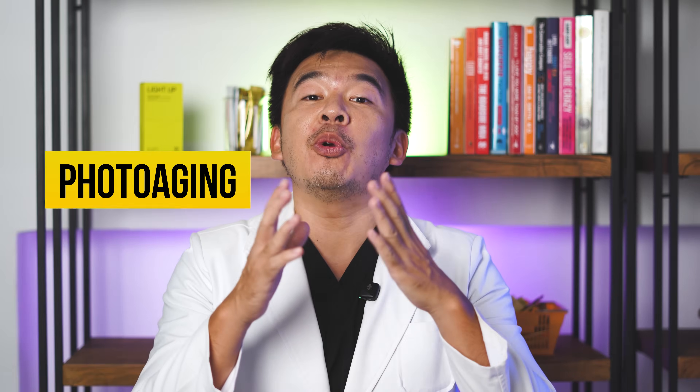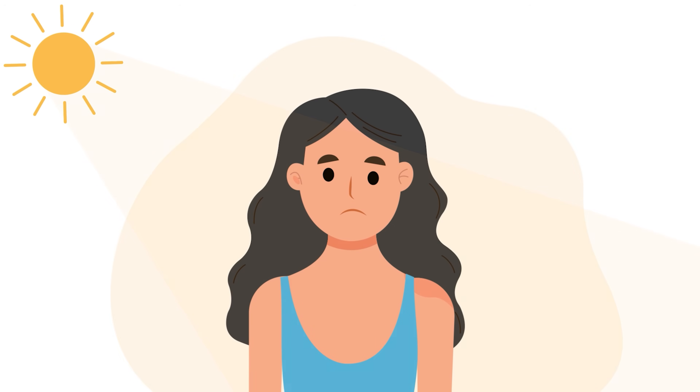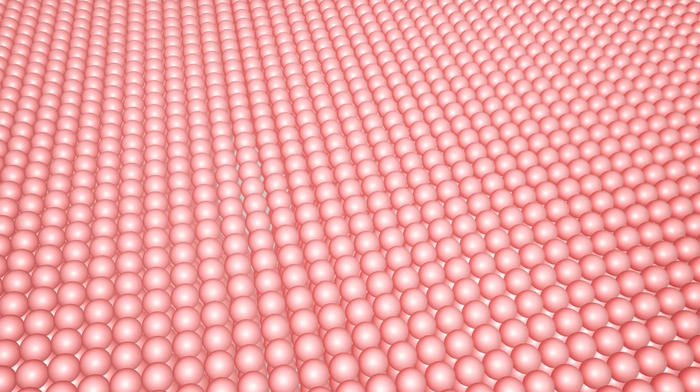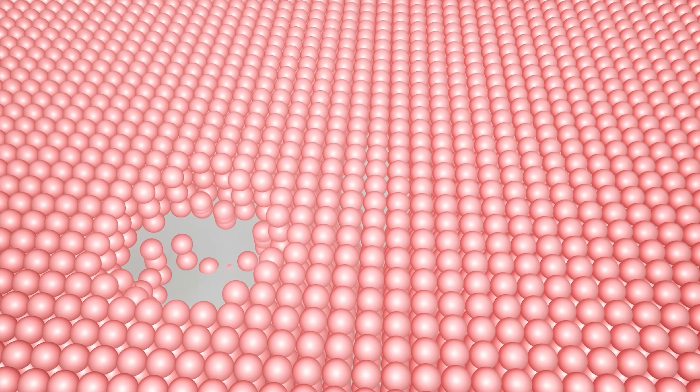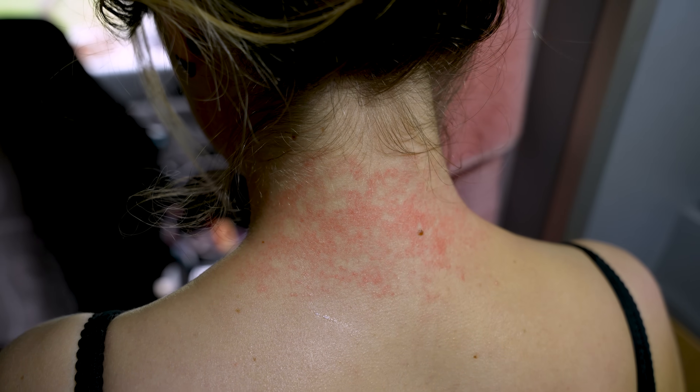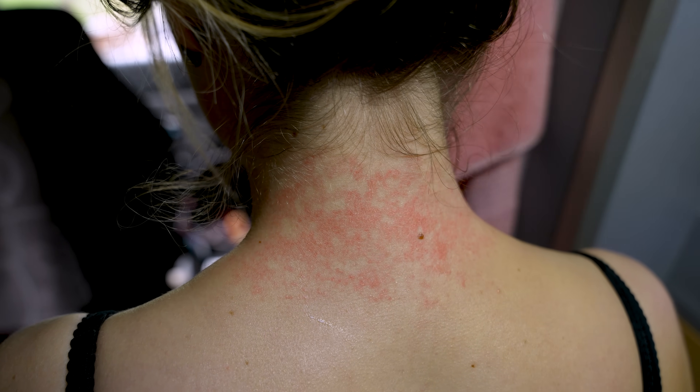Sun damage, otherwise known as photo aging, is due to prolonged exposure to UV rays that come from the sun. The UV rays cause long-term damage and you might not be able to see it instantly, but over time the structures of your skin actually alter. So let's talk about how sun damage occurs in the first place.